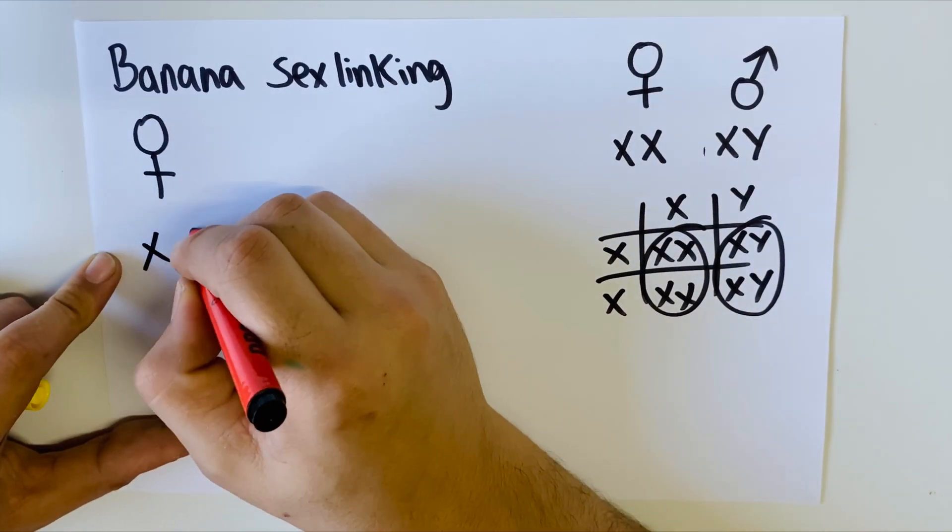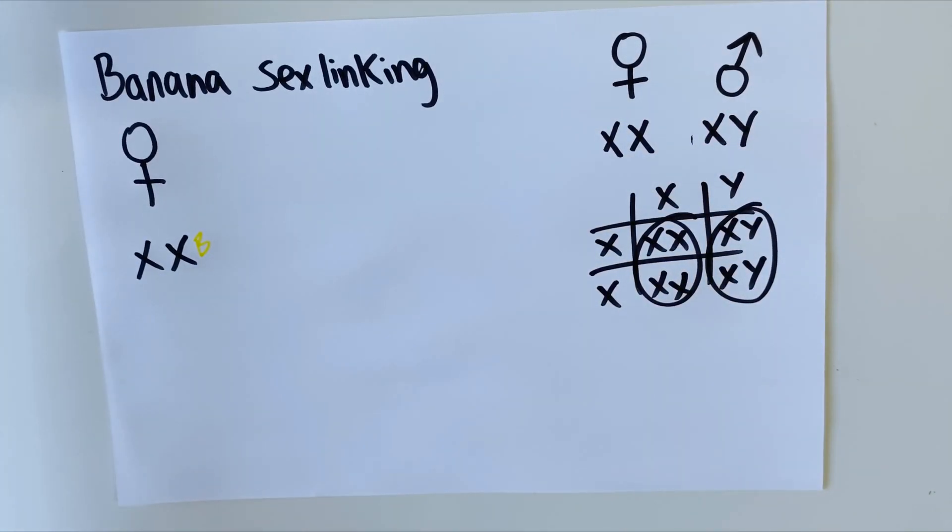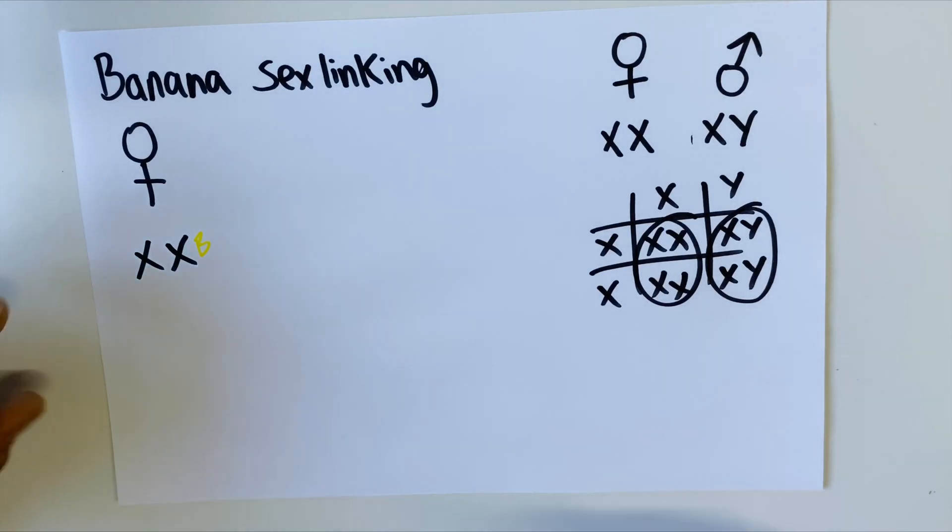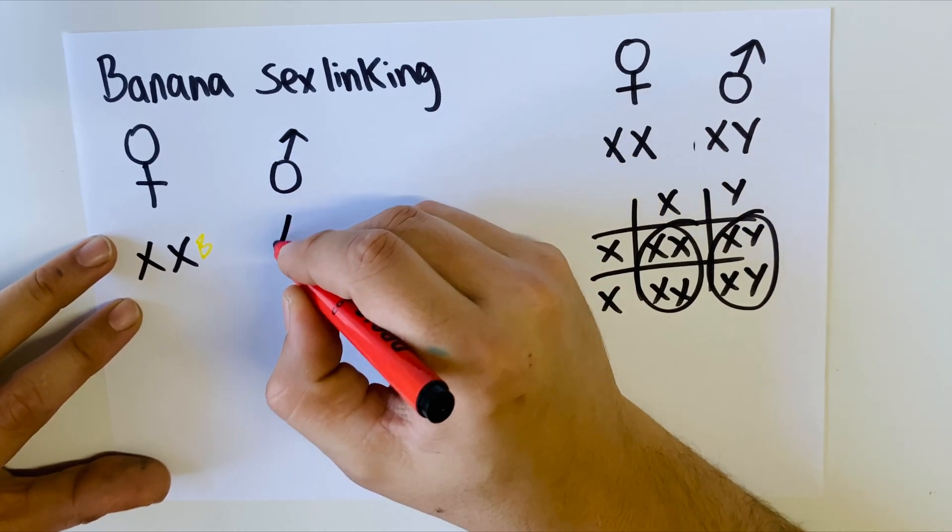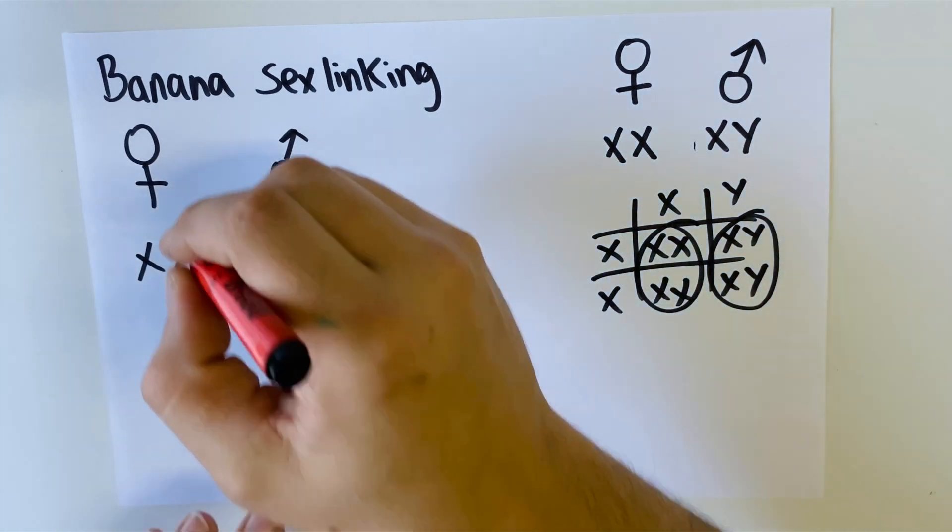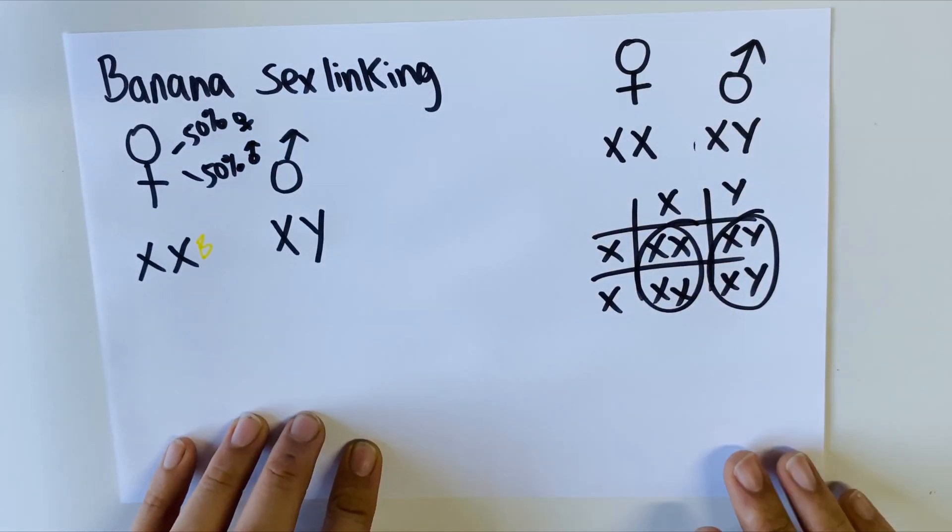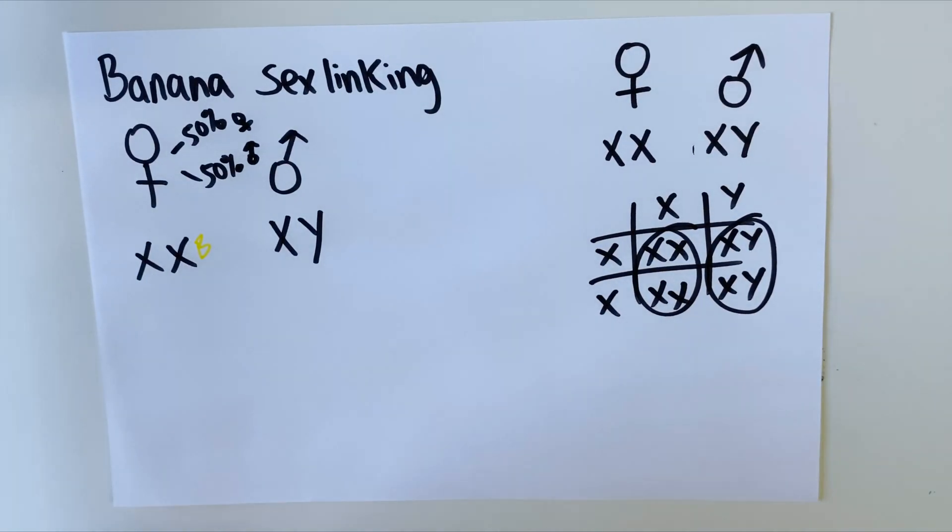This female had XX because those are her chromosomes, and on one of her X chromosomes she had the banana gene. That banana gene was linked to that particular sex chromosome. Most of the other genes are found on the other chromosomes, not on the sex chromosomes. The X and Y chromosomes are commonly called the sex chromosomes or sex-determining chromosomes. The rest are given numbers. Then she would have bred to a male, and the male would have had XY.